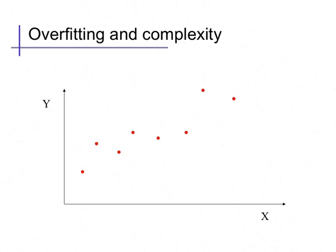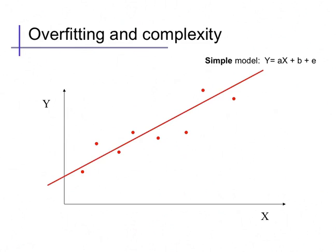Suppose we have a simple regression problem with one feature x and a real-valued target y. Here are our training examples from which we'd like to learn the relationship between x and y. Here's one possible, plausible model: y is a linear function of x, but there's an addition of a small amount of noise, so that these data points are not perfectly predictable. We're explaining each data point by a linear relationship plus some uncertainty due to things we can't actually measure.